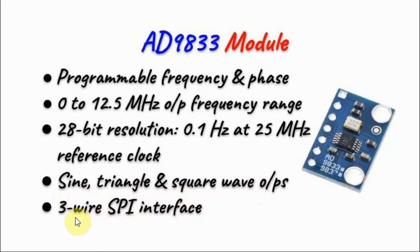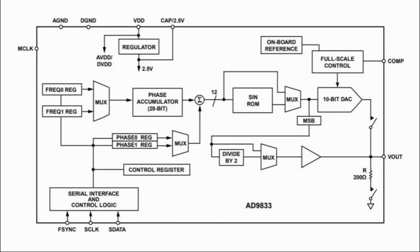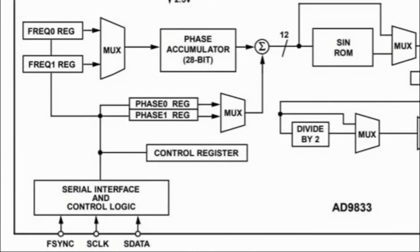It is interfaced with a microcontroller using a 3-wire SPI connection. A block diagram of the AD9833 is shown here. The programmable registers include control registers, which determine the specifications of the device and the type of waveform at the output, and two frequency registers, register 0 and register 1.